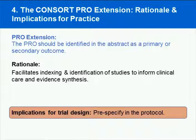We want to mention each extension to make sure it is clear to today's attendees. The first extension is that the PRO should be identified in the abstract, and it should also be specified whether it's a primary or secondary outcome. The reason for this is to facilitate indexing and identification of studies to inform clinical care and evidence synthesis. It can be quickly determined from a literature search whether the PRO is a primary or secondary outcome if this extension is met. The important point is to report it in the abstract appropriately.